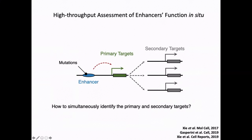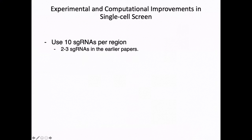The problem with these assays is that, looking at both our older data and other people's data, the assays are usually quite noisy. In most cases, if you want confident results, we have to narrow the search space of genes. So in most cases, we can only confidently identify the primary targets of enhancers, not the secondary targets. In this research, we're trying to optimize the assay so that we can detect both primary and secondary target genes.